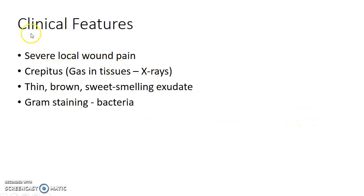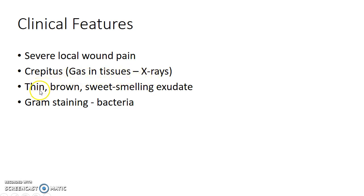Now what are the clinical features of gas gangrene? There will be severe local wound pain. There will be crepitus, which means gas in tissues, and it can be found out using X-rays. There will be thin, brown, sweet-smelling exudate. On gram staining of the exudate, we can find the causative bacteria.